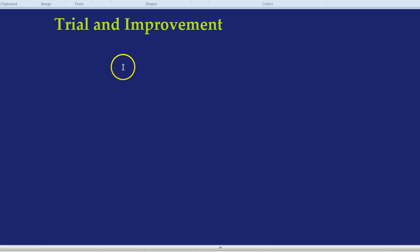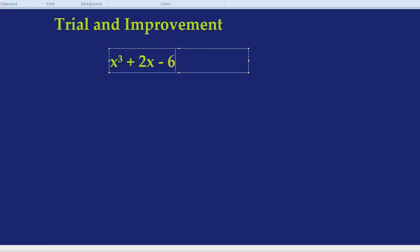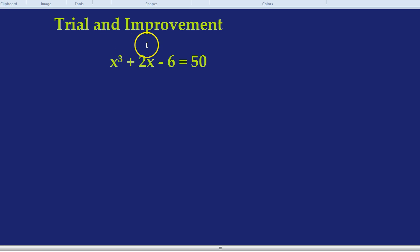To do the method of trial and improvement, we need to be given an equation that we're trying to solve. Let's do something like x cubed plus 2x minus 6 equals 50. Now we're looking for the solution to that equation. But frankly, doing it the normal way or trying to factorize or trying to solve it in some different way would actually be really quite tough. And there's a simpler way of going about it. It's not quite as accurate, but it's a good way of going.